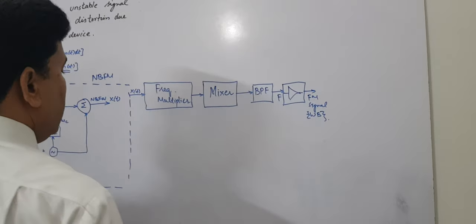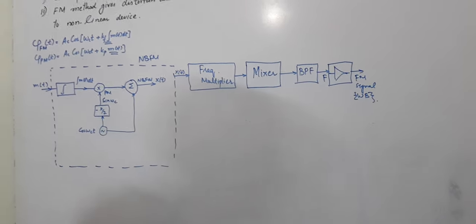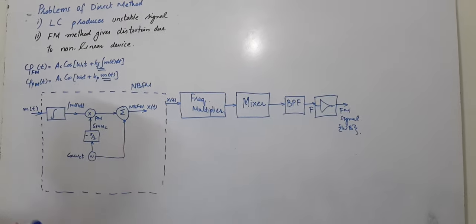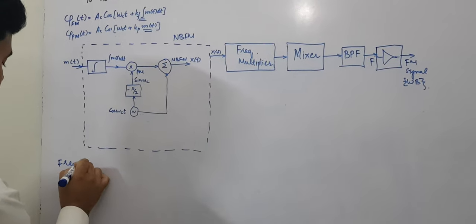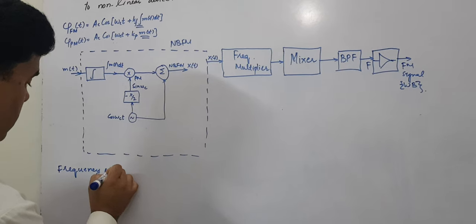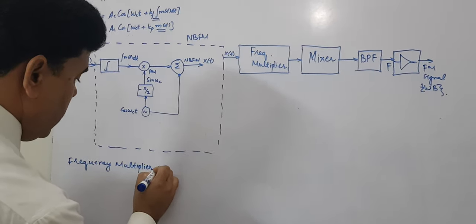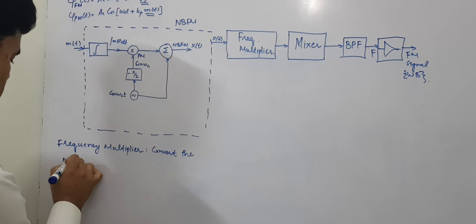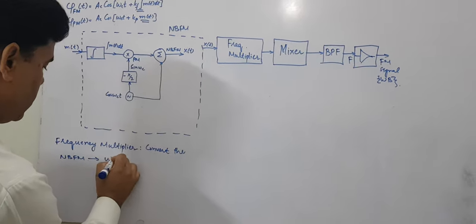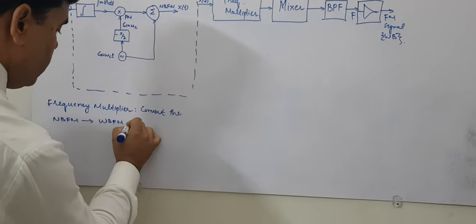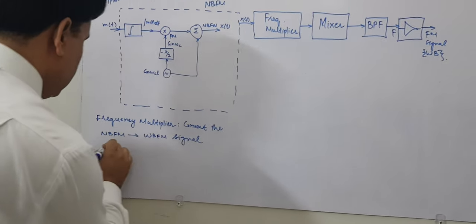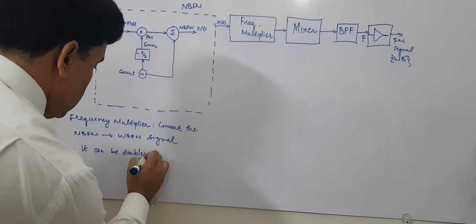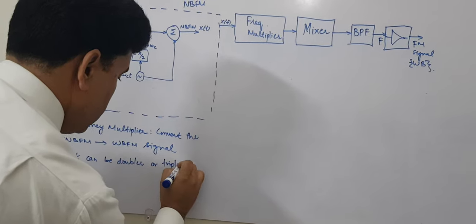What is a frequency multiplier? A frequency multiplier is used to double or triple the frequency. Using it, we can convert the narrow band FM signal to a wide band FM signal. That is why we use a frequency multiplier — to convert the narrow band FM to the wide band FM signal. It can be a doubler or a tripler.